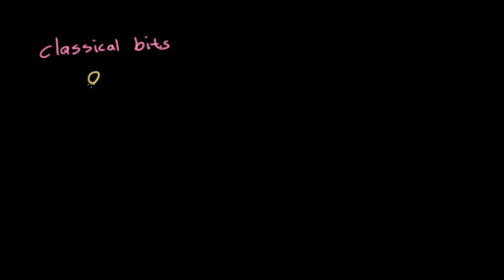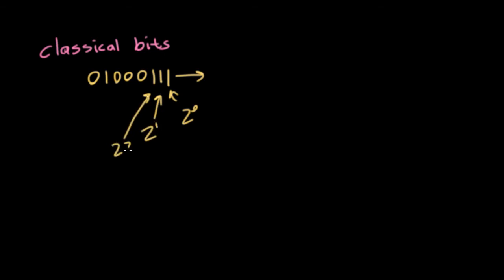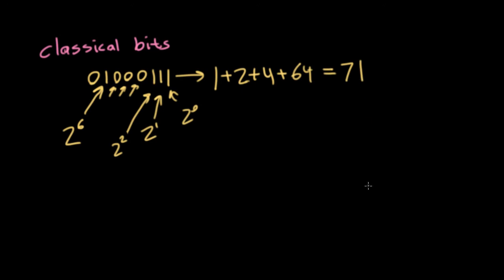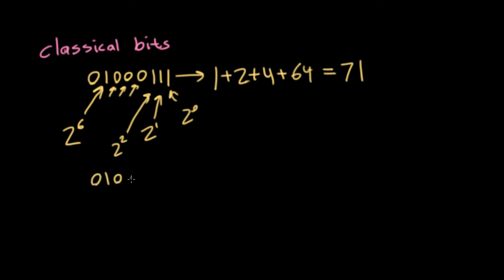So let's talk about multiple bits. What if I had 0, 1, 0, 0, 0, 1, 1, 1? So what is this? Well, you might look at this and say, let me interpret this as a binary string. This would be 2 to the 0, 2 to the 1, 2 to the 2, and so on up to 2 to the 6. So that would be 1 plus 2 plus 4 plus 64, which gives me 71. But I made a big assumption in interpreting the string of bits — I interpreted these symbols 0 and 1 as binary digits in an integer base-2 number system. But maybe there would be another way I could interpret this bit string.